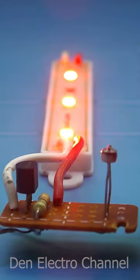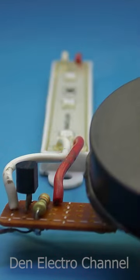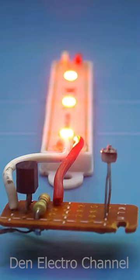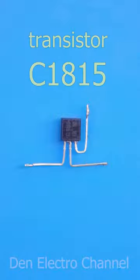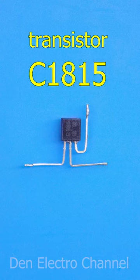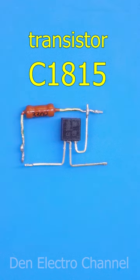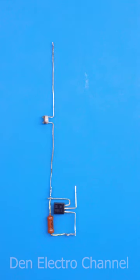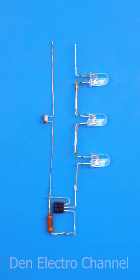You can make a simple light sensor circuit yourself. It only takes a few details to do this: a C1815 bipolar transistor, a 330 ohm resistor, a hundred kilo ohm or more photo resistor, three five millimeter LEDs, and a